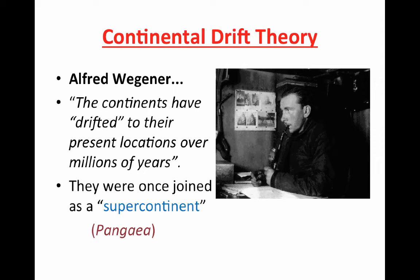Alfred Wegener was a German scientist who proposed the idea of continental drift. He said, and I quote, 'The continents have drifted to their present locations over millions of years.' They were once joined as a supercontinent, which he called Pangaea.